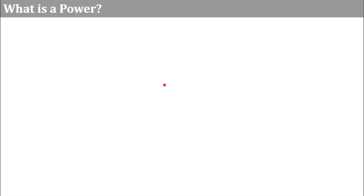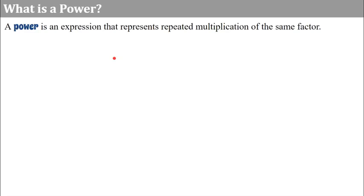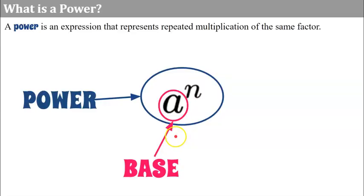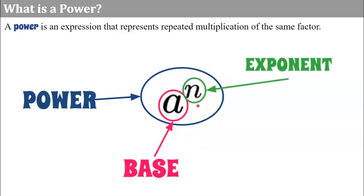We're going to start with what is a power. I'll note that this is an Algebra 1 lesson, and my students learned all of these properties and rules in grade 8 math, so this is a comprehensive review. A power is an expression that represents repeated multiplication of the same factor. The entire expression a to the n is called a power, where a represents the base and n represents the exponent, which tells us how many times to multiply the base by itself.